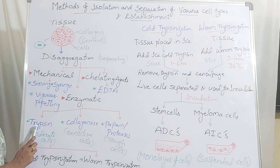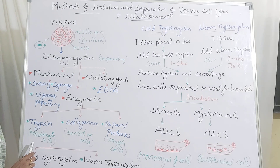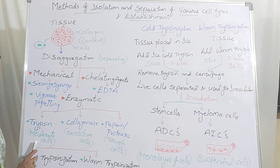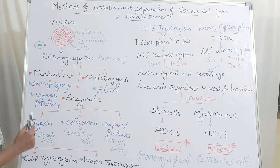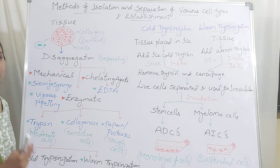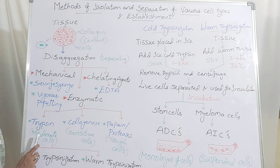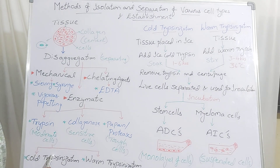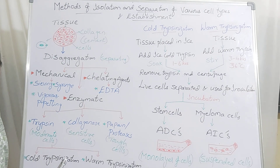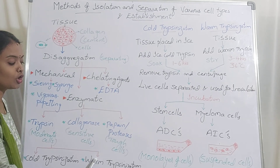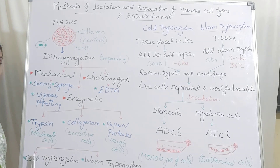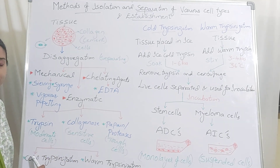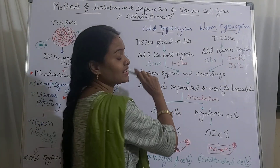The use of trypsin — by using trypsin to undergo the disaggregation process, we call it the trypsinization process. Disaggregating tissue using trypsin is referred to as trypsinization. After trypsinization, you obtain single cells which can be used for inoculation. In trypsinization, trypsin is used for moderate cells, and we have gentle and harsh treatment. If you use cold trypsin, the process is referred to as cold trypsinization; if you use warm trypsin, it is referred to as warm trypsinization.